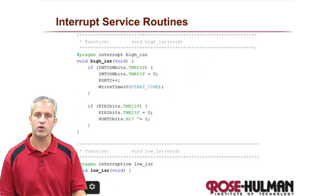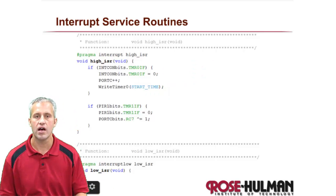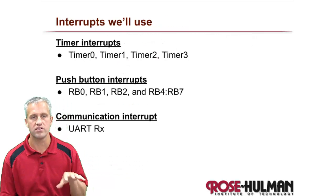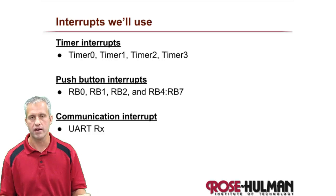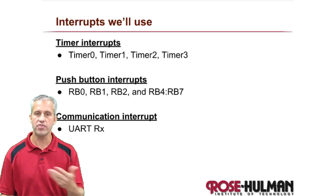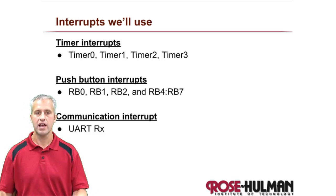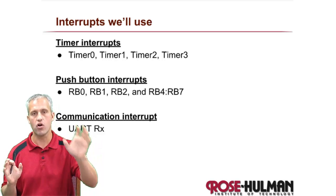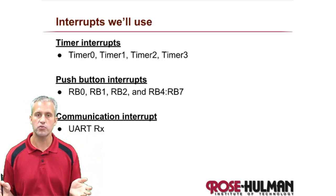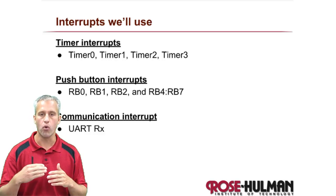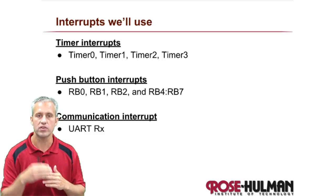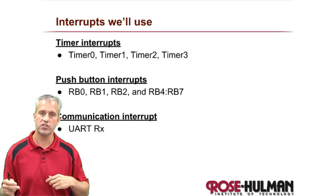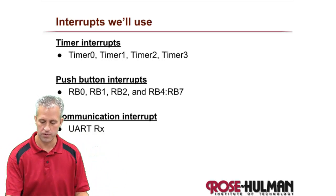Last time we learned about timer interrupts. Now we're going to add another one. The one we're adding today is pushbutton interrupts. Another event that could happen is a pushbutton press, which can call an interrupt. We've used pushbuttons before, but we've always done polling — just constantly checking the value over and over.